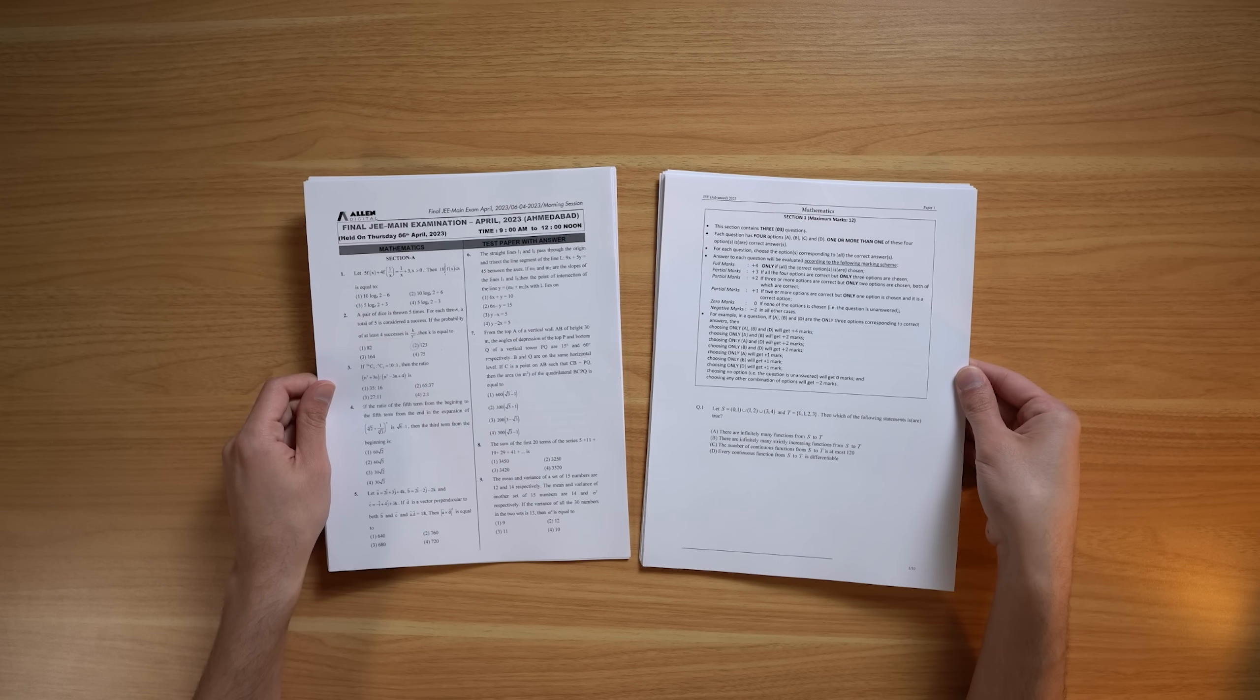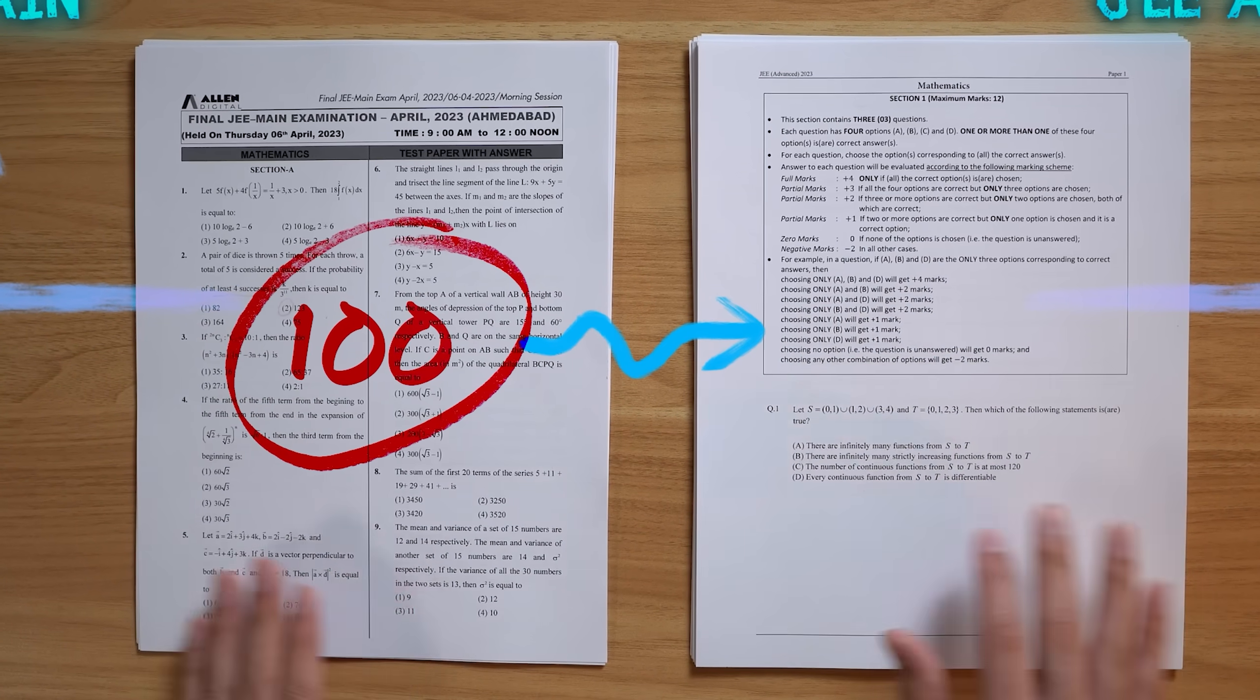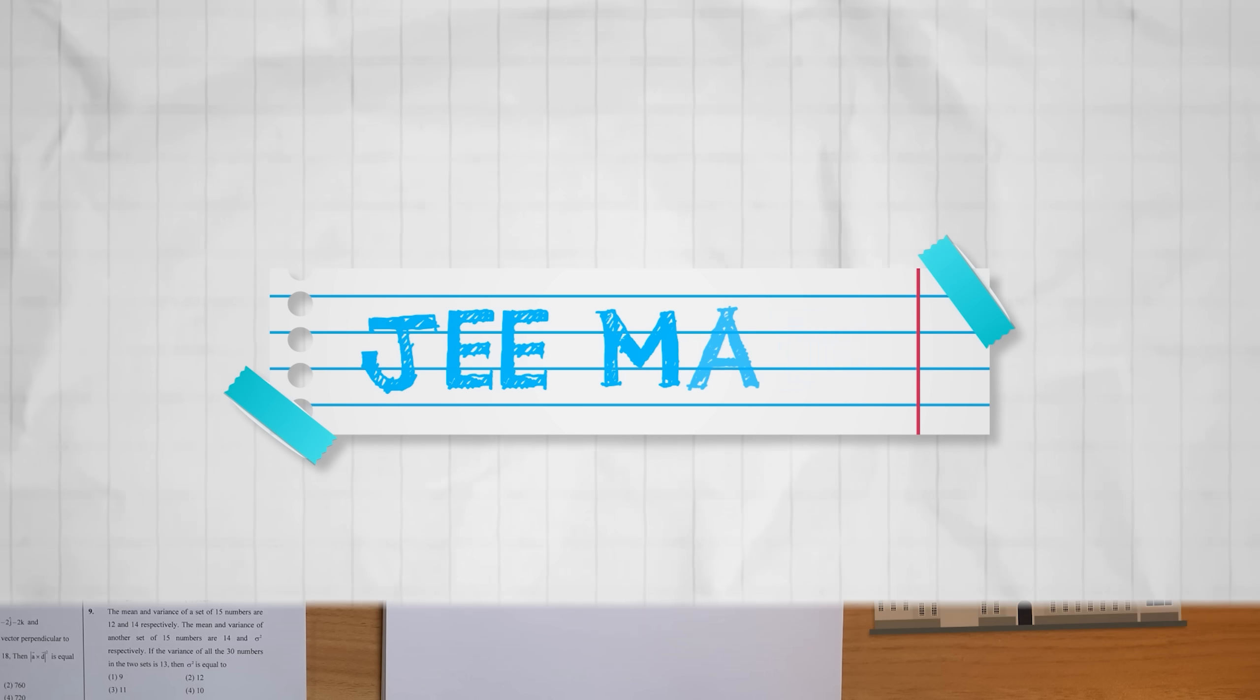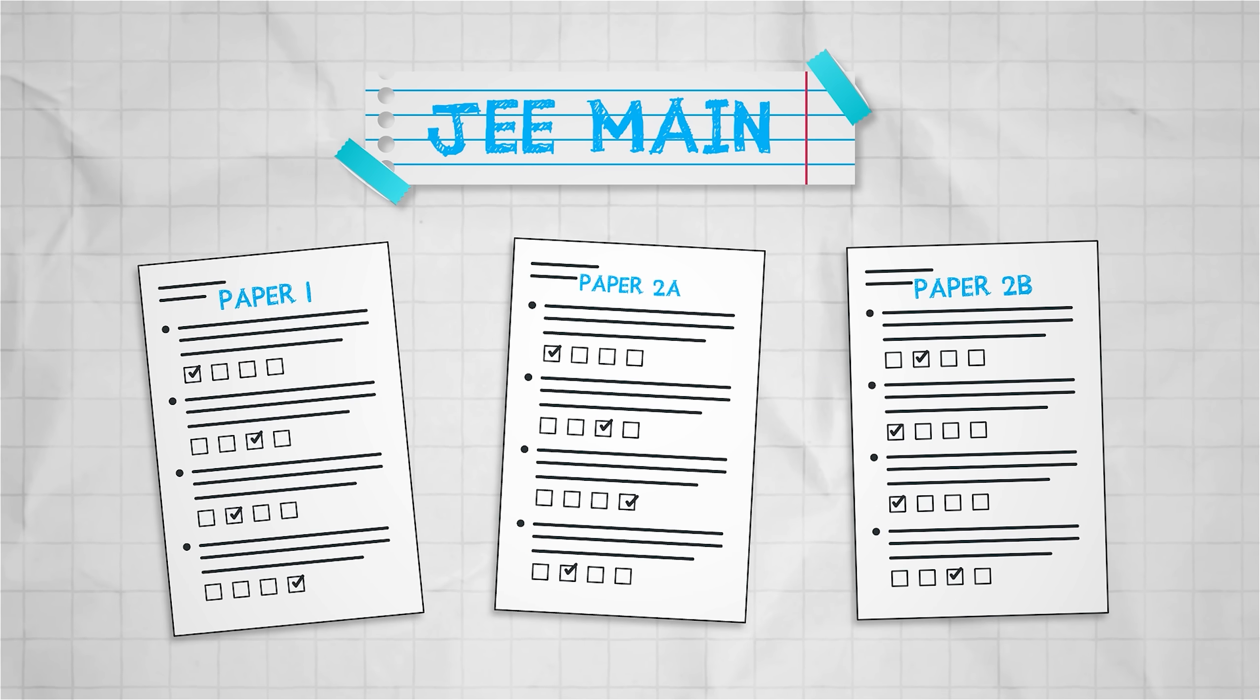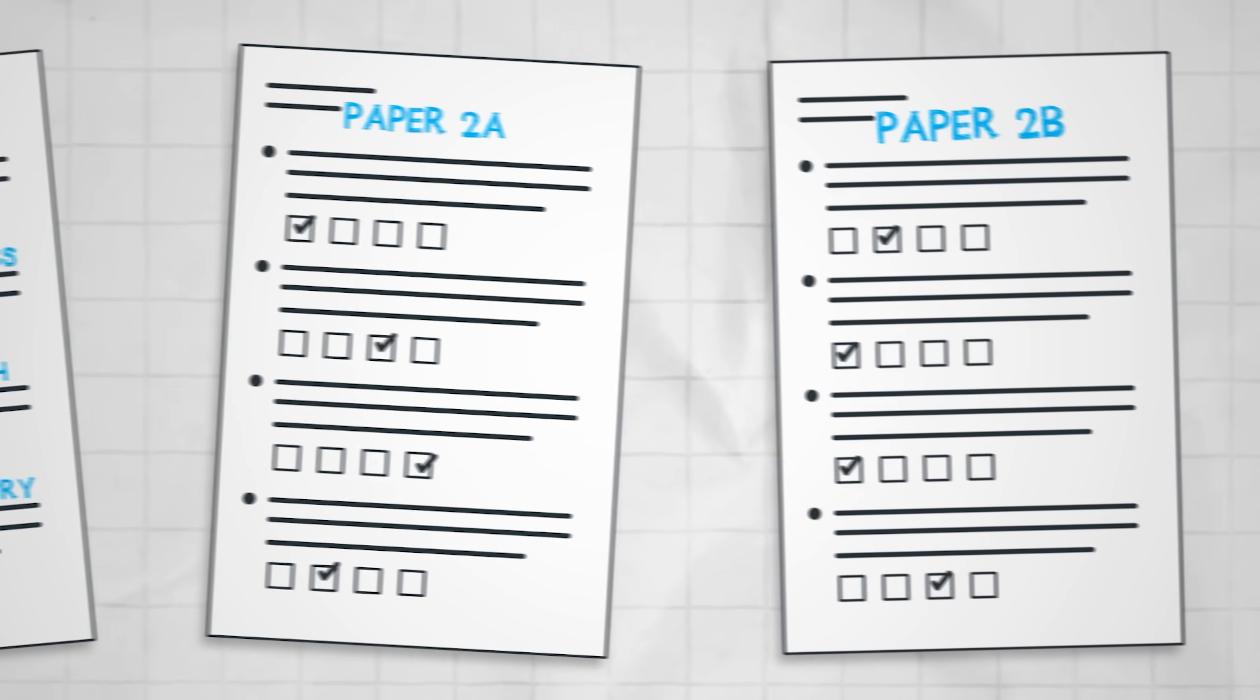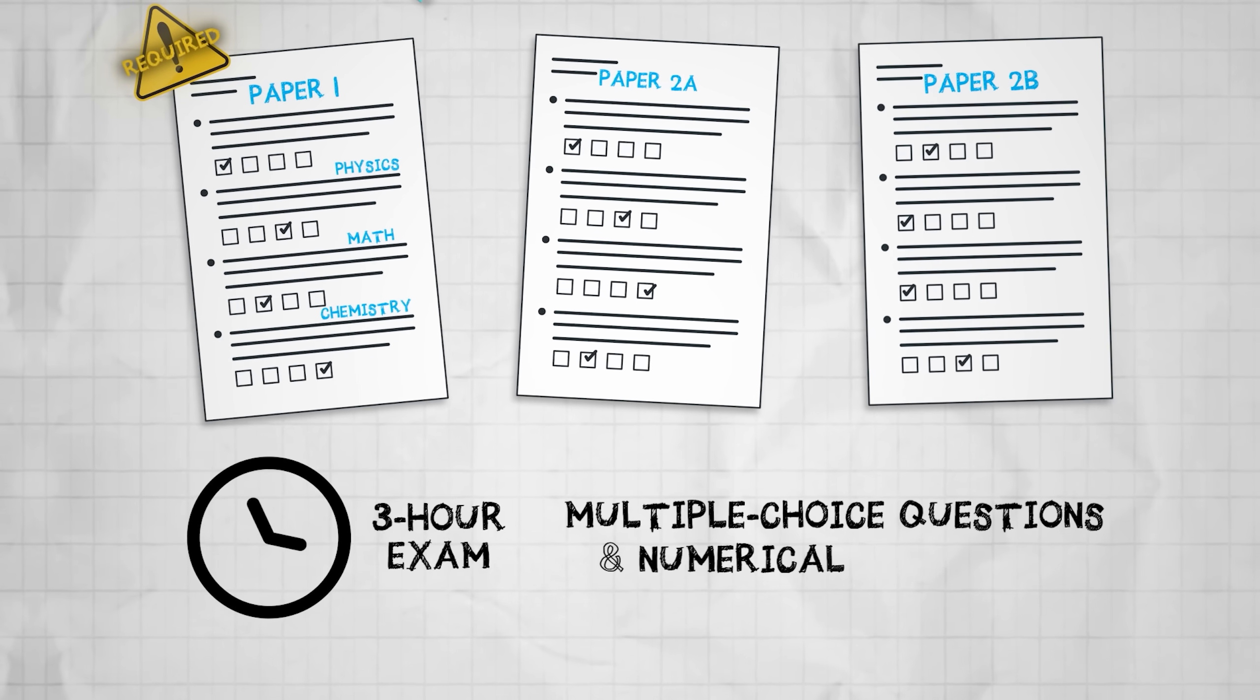So the JEE consists of two parts, JEE Main and JEE Advanced. If you do well enough on the Main, you'll qualify for the Advanced. And the Advanced is what you need to do well on if you want to get into the IITs. So the Main consists of three papers, Paper 1, Paper 2A, and Paper 2B. Paper 1 is required of all candidates and tests them on their knowledge of physics, math, and chemistry. 2A and 2B are optional depending on what you want to study. Each paper is a three-hour exam that consists of multiple choice questions and numerical questions.